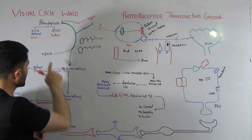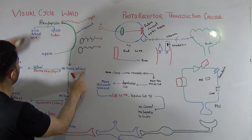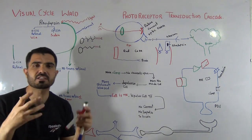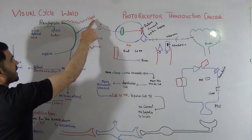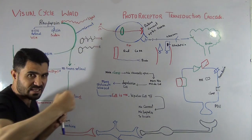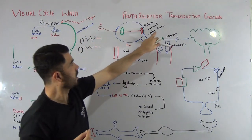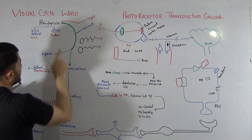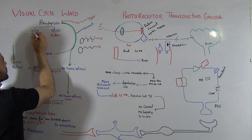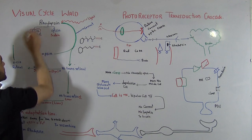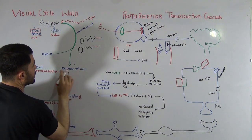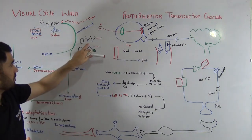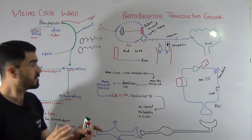When light falls on your retina, rhodopsin is broken down into two pieces: opsin and all-trans retinal. Two things must be memorized. Number one: when light falls on rhodopsin, a small current called a nerve impulse is produced that travels to the brain. Number two: 11-cis retinal is converted into all-trans retinal.